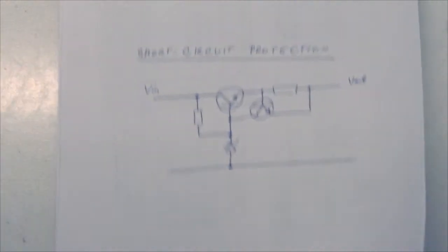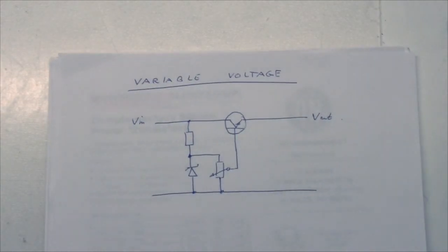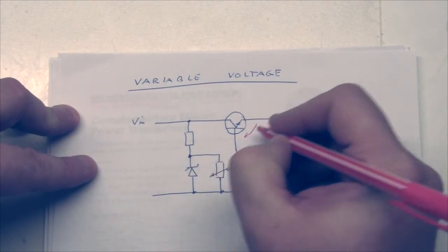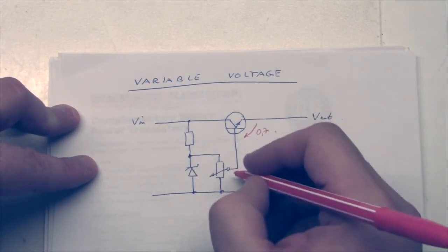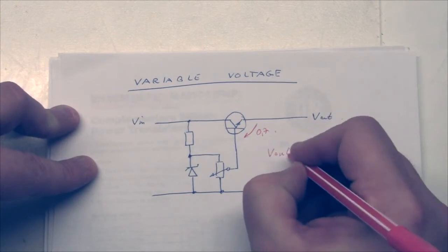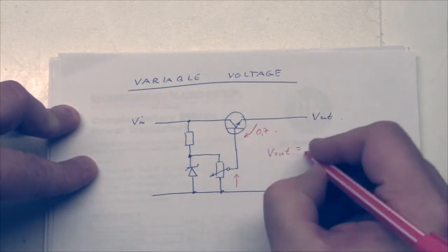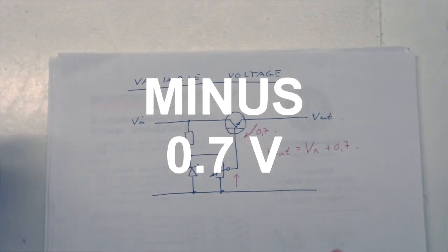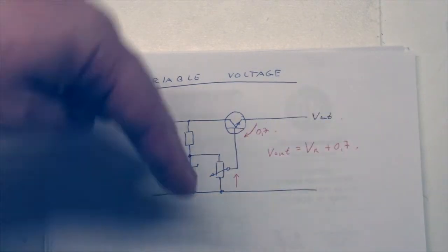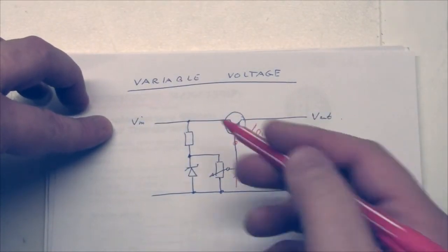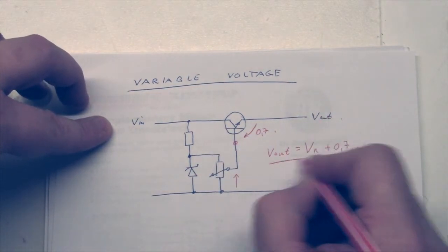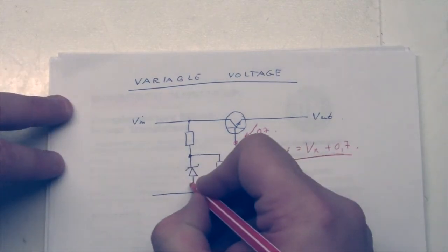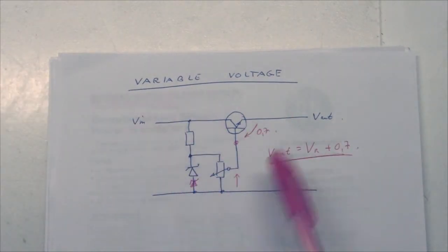The next thing will be how do we get a variable voltage. As we saw previously, Vout and the voltage here is 0.7, so we have Vout is equal to this voltage here, we can call it Vr plus 0.7. So all we have to do is put a potentiometer here and we can adjust the voltage on this point, and Vout will basically just follow because of this equation. So with just a Zener or maybe 2 for temperature stability, we can do a variable voltage.